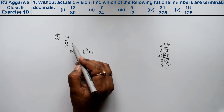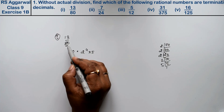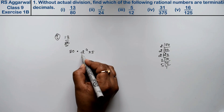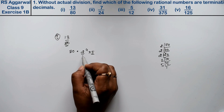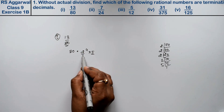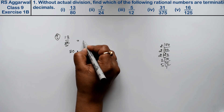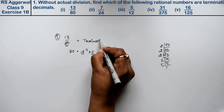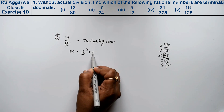If you have any number and want to tell without division whether it is terminating or non-terminating, check its denominator's factors. Since 80 = 2⁴ × 5, it contains only 2s and 5s, so this is a terminating decimal.